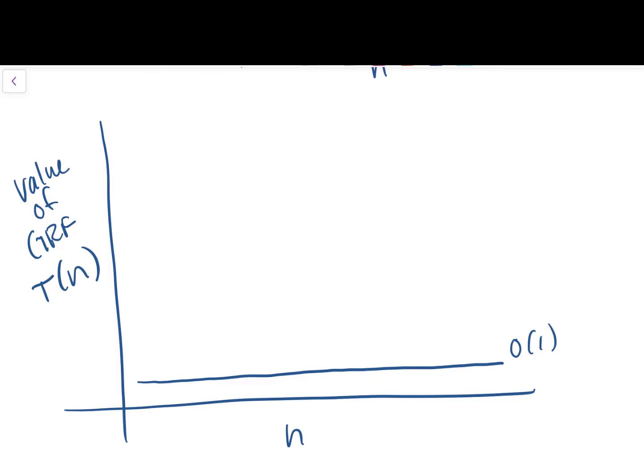As n gets large, the impact of the 3 scaling factor and the 2 constant become insignificant. The work is linearly proportional to n. Now, in closing this video, I'd like to draw a chart here that presents the most common families or classes of algorithms grouped by their big O notation, their time complexity.